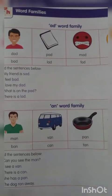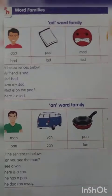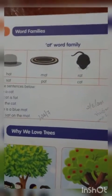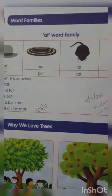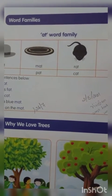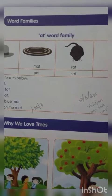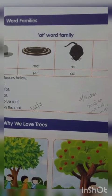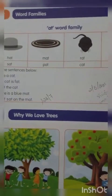Turn to the next page — page number 26. Here we learned about AT word family. AT word family: mat, rat, cat, pat.